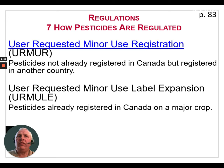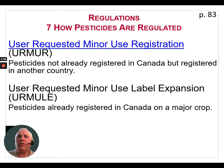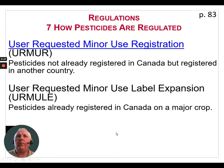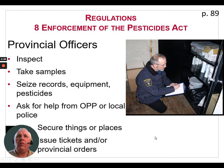There are also user-requested minor use registrations — for pesticides that are not already registered in Canada but are registered in another country. There is also a user-requested minor use label expansion, which is for a pesticide that's already registered in Canada on a major crop.